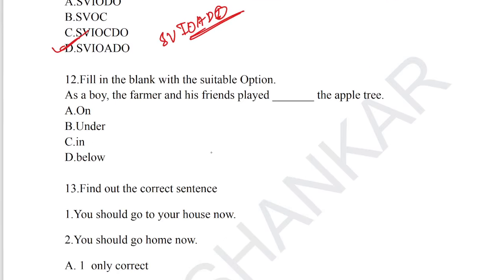Question number 12: fill in the blank with suitable options, from the grammar section on prepositions. 'As a boy, the farmer and his friends played under the apple tree.' When denoting the lower portion of a tree, we must use the word 'under'. Option B is the correct answer for question number 12.